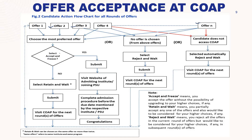The first option is 'Accept and Freeze.' If you select yes here — meaning you accept and freeze — then you simply submit it. After submission, whatever offer you accepted for a particular institute and branch, you then have to visit that institute's website and complete the admission process through their admission portal, or through the PSU portal if applicable.